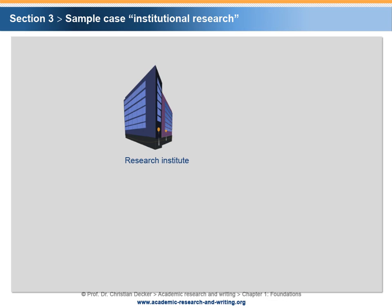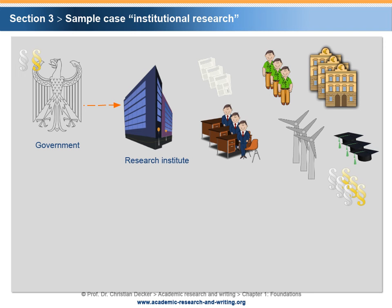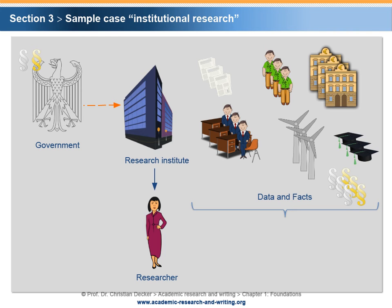The third sample case uses the topic of windmill financing in order to exemplify research activities within research institutes. The public authorities have decided to support the development and expansion of renewable energies. Therefore, the public authorities support, next to the research of technical prerequisites, the research of the legal and economic conditions. For this purpose, research institutes are receiving public funds. At the chosen institutes, researchers are analyzing the conditions of the further development of renewable energies. Microeconomic and macroeconomic data and facts are collected, and the process information is provided to the interested public.